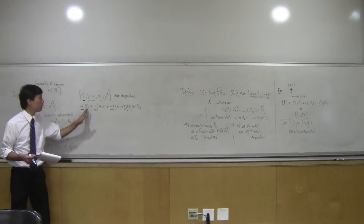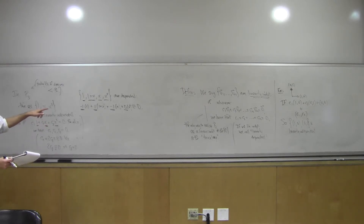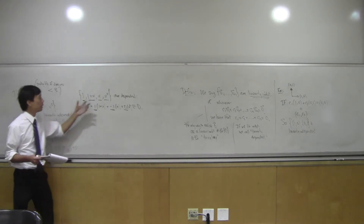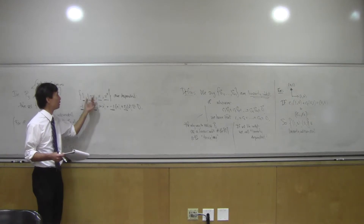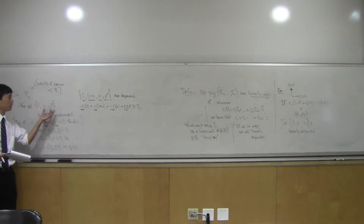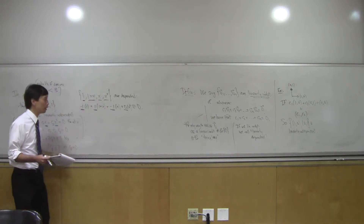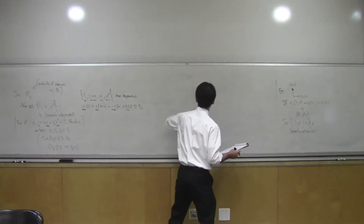The key idea seeping through here: dependent means there's some sort of redundancy, and independent means there's a sort of minimality. In our dependent example, (1+x) was already a linear combination of the other vectors. In the independent case, nobody is a linear combination of anybody else — there's minimality.